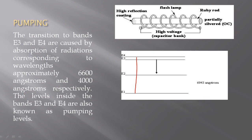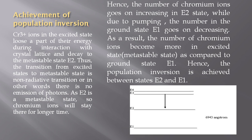The wavelength 6600 angstroms corresponds to the transition from E1 to E3, and 4000 angstroms corresponds to the transition from E1 to E4. Because the greater the energy difference, the lesser the wavelength. The levels inside the bands E3 and E4 are also known as pumping levels.